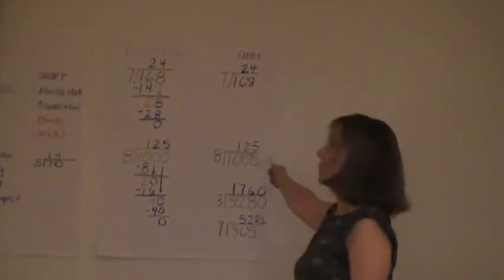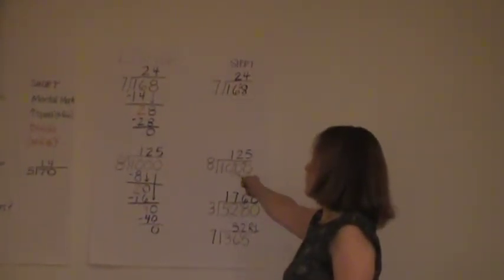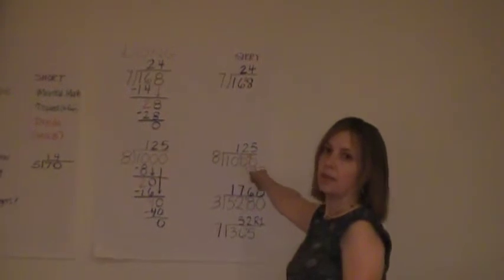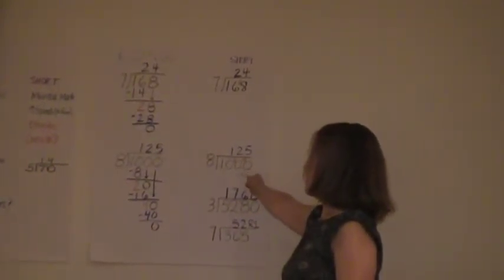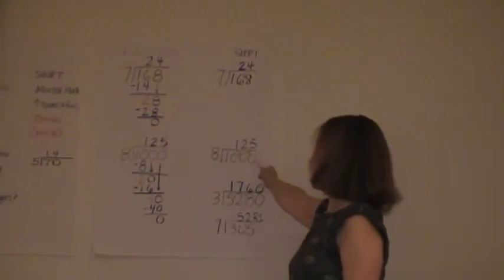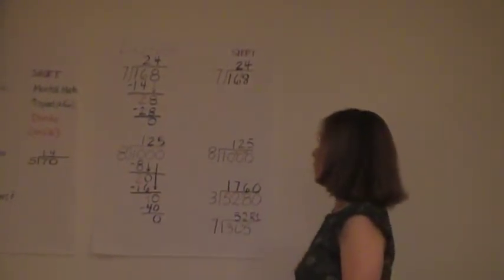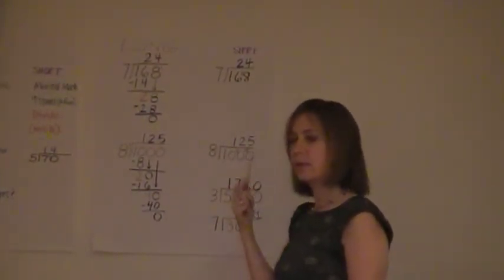In the short division, we end up writing two red numbers here. 8 goes into 10 once, 10 minus 8 is 2, that creates 8 into 20. 8 goes into 20 twice and 20 minus 16 is 4 and that brings us this last problem, 8 goes into 40 five times. So you can see that it saves you from doing all these steps and you do need to do a little bit of mental math.